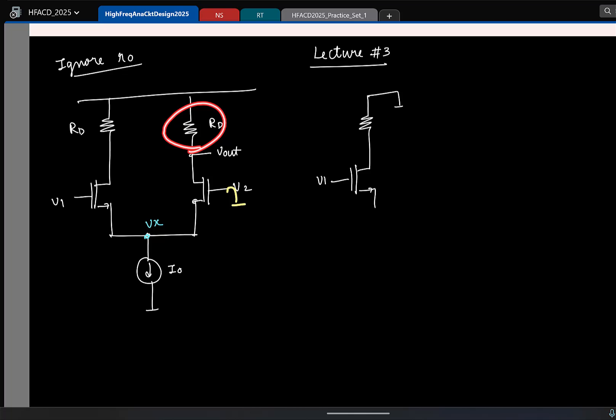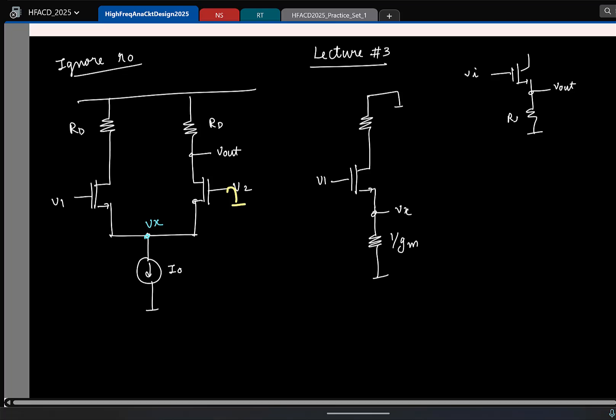And what do you do for V2 when you find the effect of V1? Short. Short it. So if I short this fellow, what is the effective resistance looking into the source? Rd is R naught and I ignored R naught, so yeah, looking into the source, the resistance is what? 1 by gm, we did it last class in common drain and again to remind you, the resistance is 1 by gm if I ignore R naught, right?